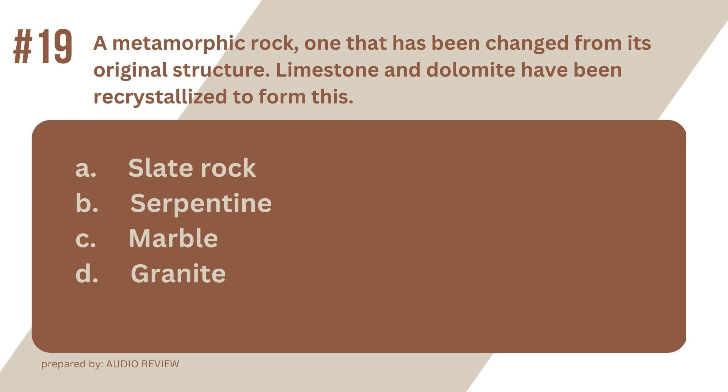Question 19. A metamorphic rock, one that has been changed from its original structure. Limestone and dolomite have been recrystallized to form this. A. Slate rock. B. Serpentine. C. Marble. D. Granite. The answer? It's C. Marble. A metamorphic rock, one that has been changed from its original structure. Limestone and dolomite have been recrystallized to form this. Marble.